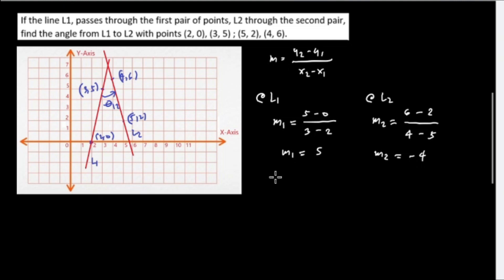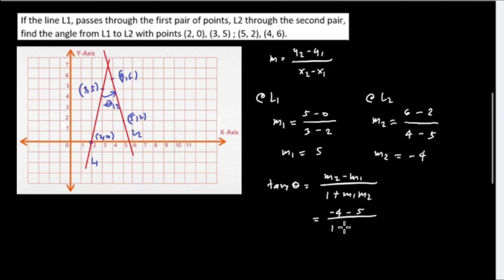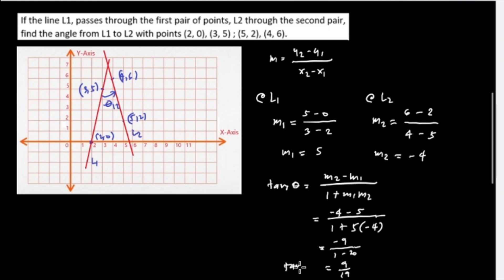Using the angle between two lines formula, tan θ = (M2 − M1)/(1 + M1·M2). Substituting M2 = −4 and M1 = 5: tan θ = (−4 − 5)/(1 + 5·(−4)) = −9/(1 − 20) = −9/(−19) = 9/19. So tan θ₁₂ = 9/19, which is the angle from line L1 to line L2.